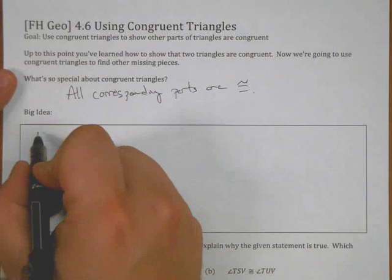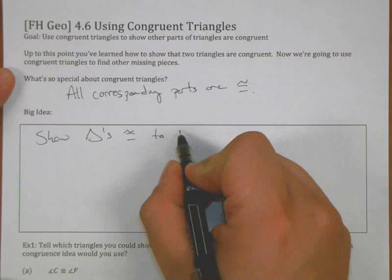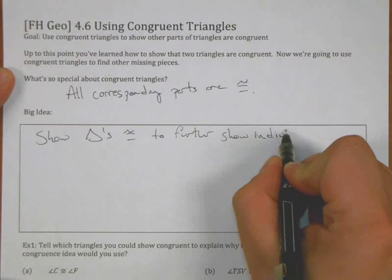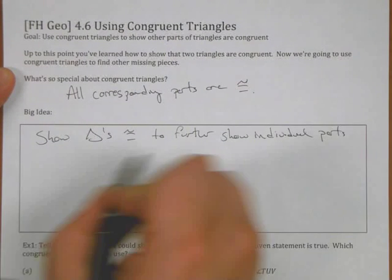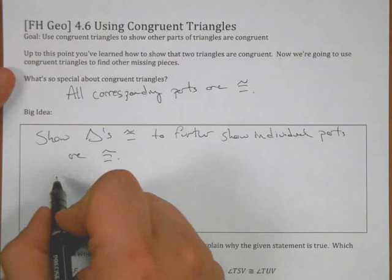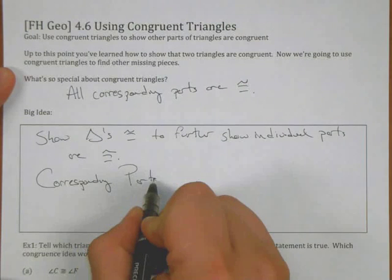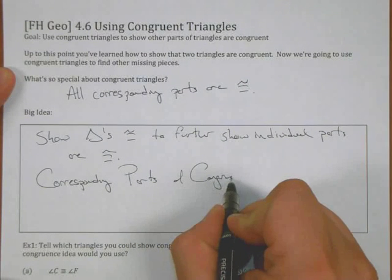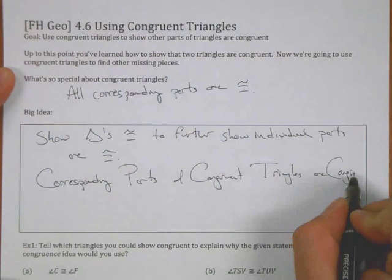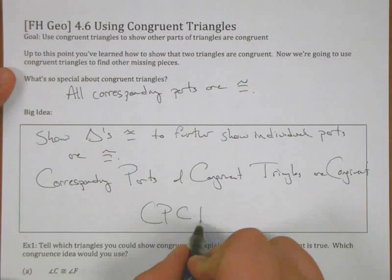Our big idea is that we're going to show triangles are congruent to further show individual parts are congruent. And we summarize that with the phrase, corresponding parts of congruent triangles are congruent. Or as the acronym goes, CPCTC.